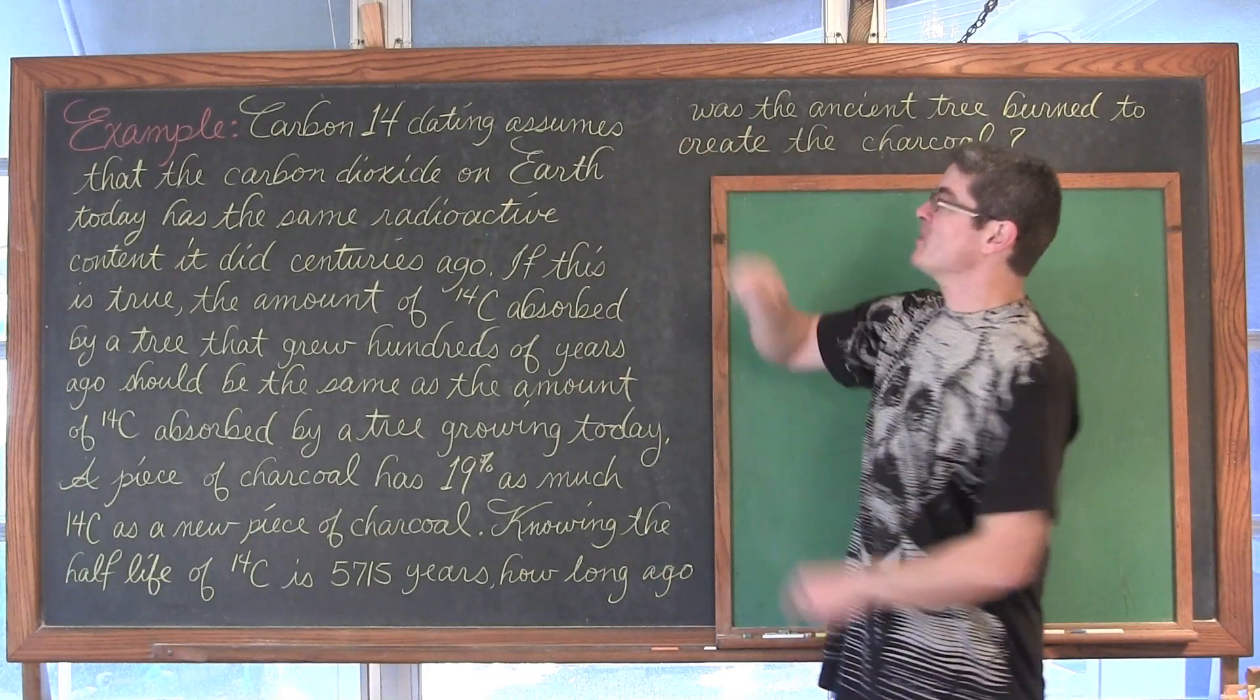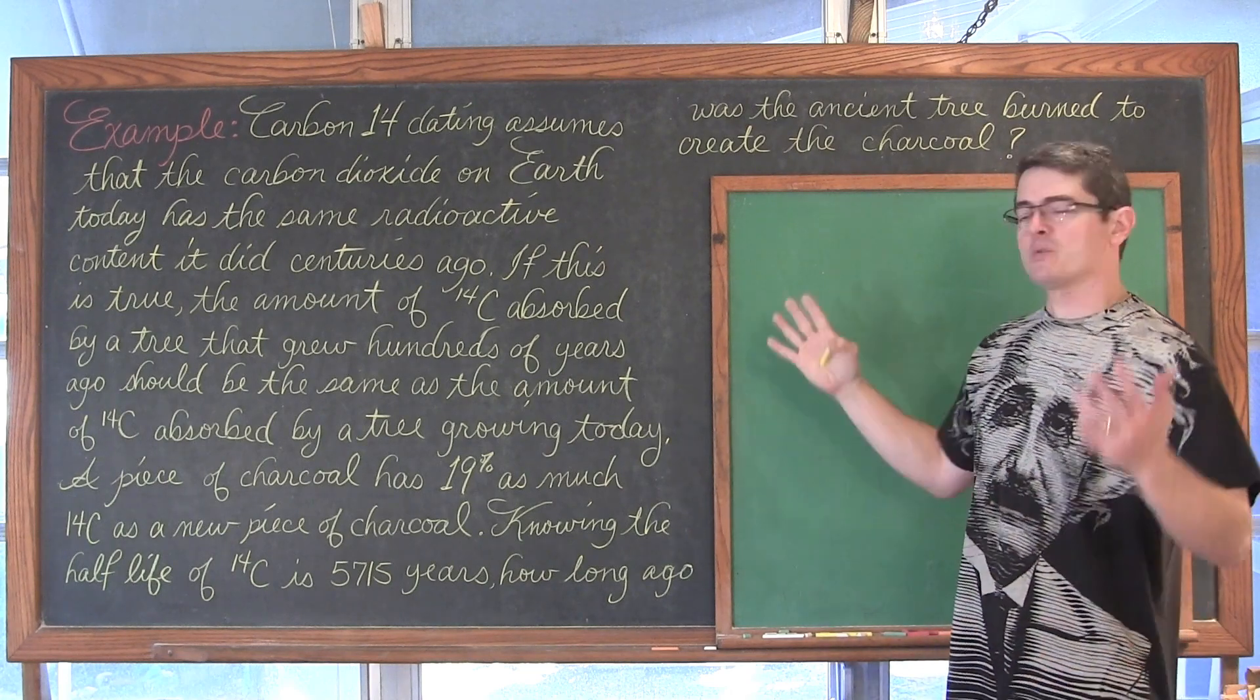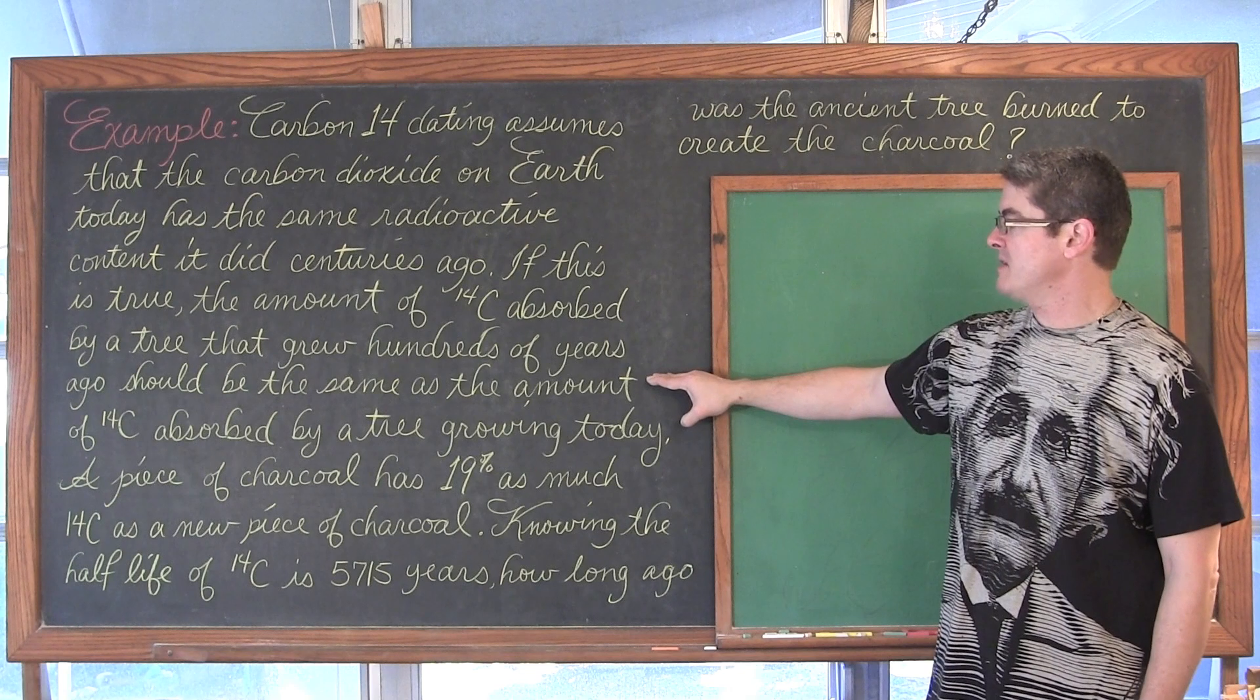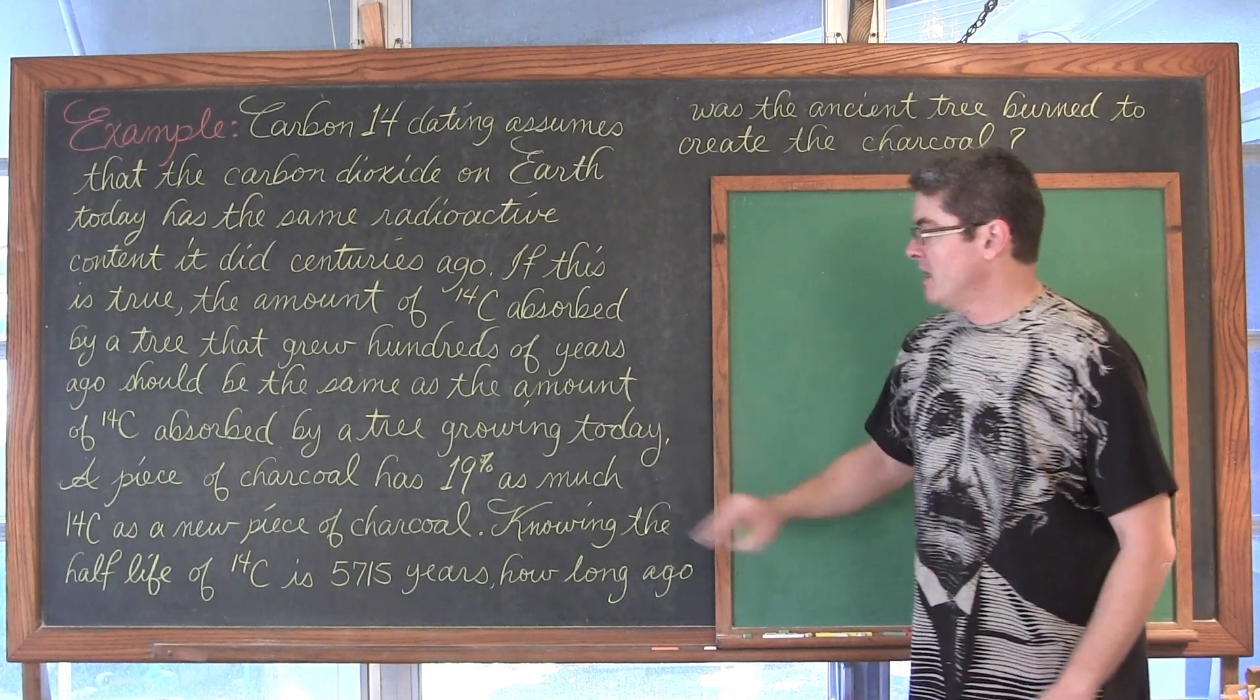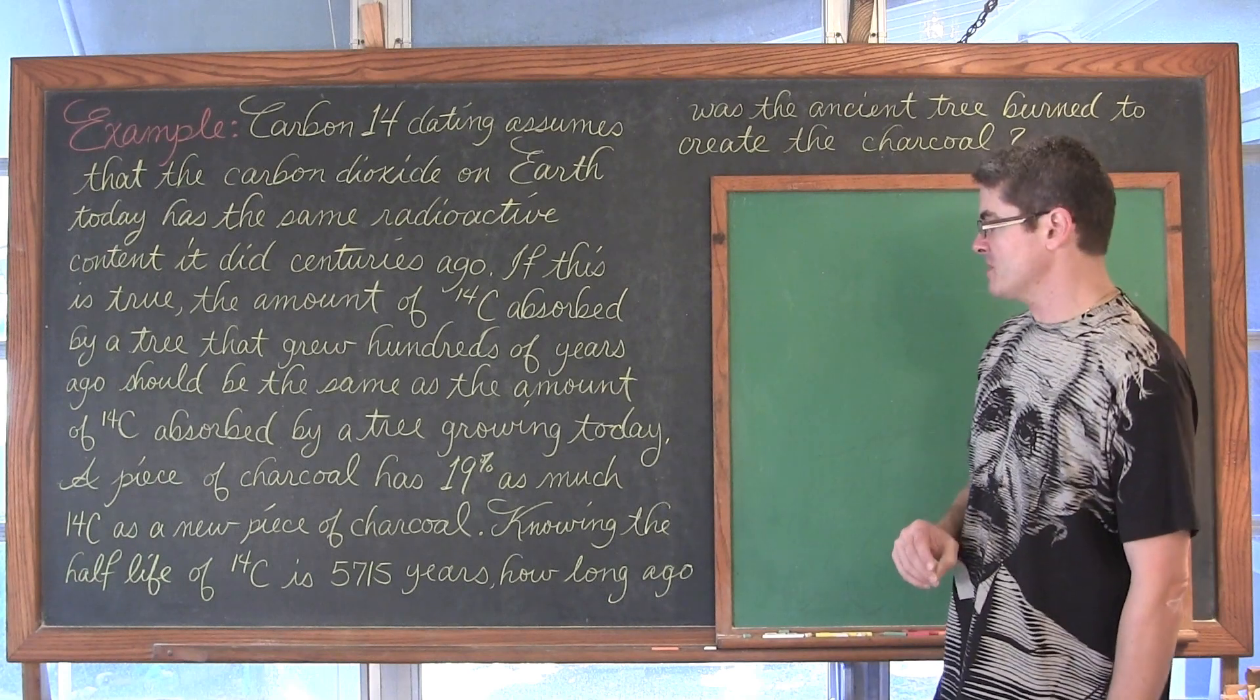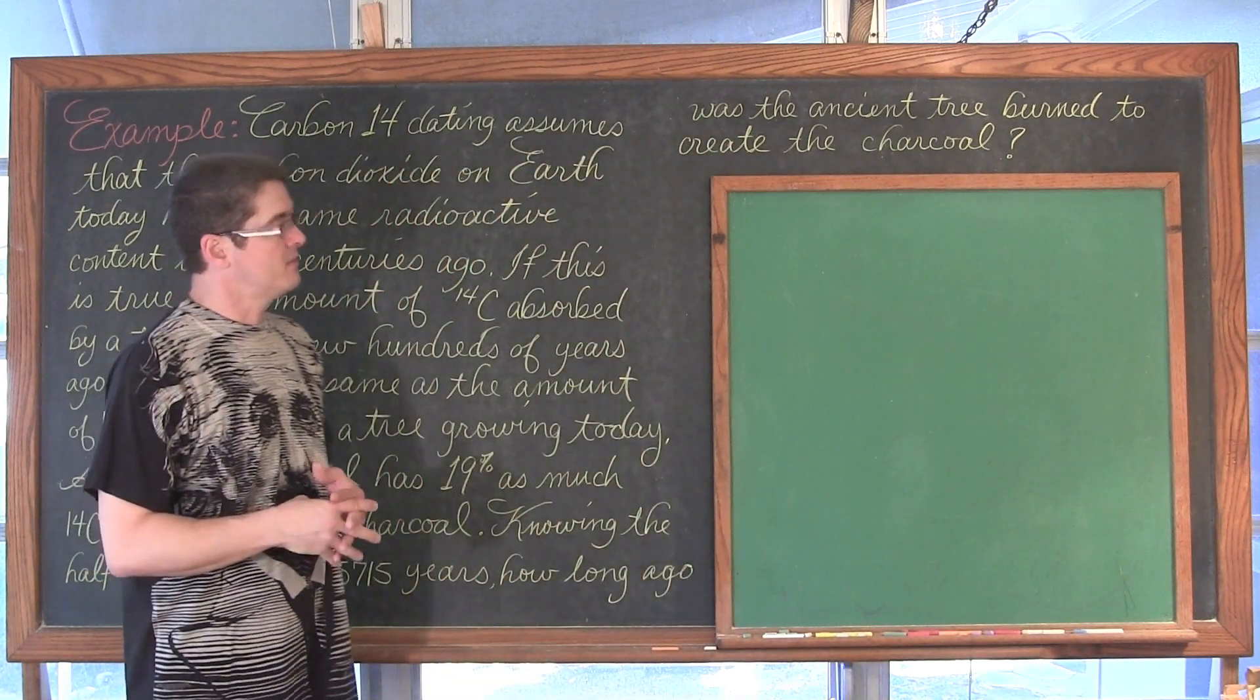Here we go. Carbon-14 dating assumes that carbon dioxide on Earth today has the same radioactive content it did centuries ago. If this is true, the amount of carbon-14 absorbed by a tree that grew hundreds of years ago should be the same as absorbed by a tree growing today. A piece of charcoal has 19% as much carbon-14 as a new piece. Knowing the half-life of carbon-14 is 5,715 years, how long ago was the ancient tree burned to create the charcoal?